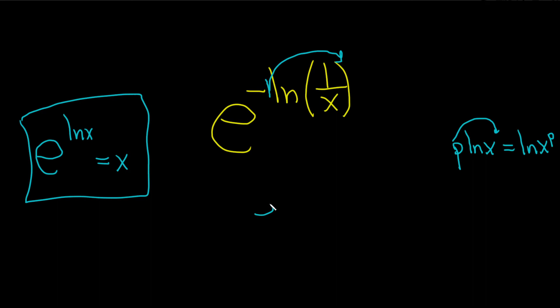So here this is e to the natural log of 1 over x and then this is to the negative 1. Okay now these cancel and you just get 1 over x to the negative 1.